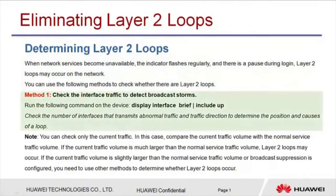Method 1: Check the interface traffic to detect broadcast storms. Run the 'display interface brief | include up' command on the device to check the incoming and outgoing traffic on interfaces in up state. When the input usage and output usage on one or more interfaces are unexpectedly large, a loop occurs on that interface. When the input or output usage of an interface is very large, a loop occurs on the network connected to the interface.